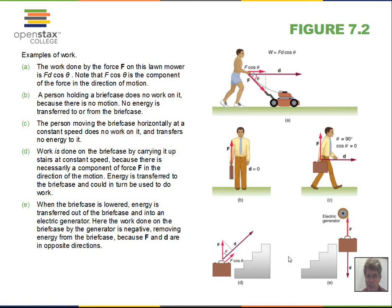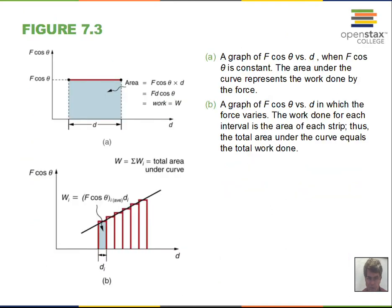If someone does work on a briefcase and attaches it to a cable connected to an electric generator, when the briefcase is released and falls toward the floor, the tension in the cable does work on the generator. The energy created by the generator comes from the loss of energy of the briefcase — it has potential energy that decreases as it moves toward the floor. These are some of the topics we'll discuss: work, kinetic energy, and potential energy.